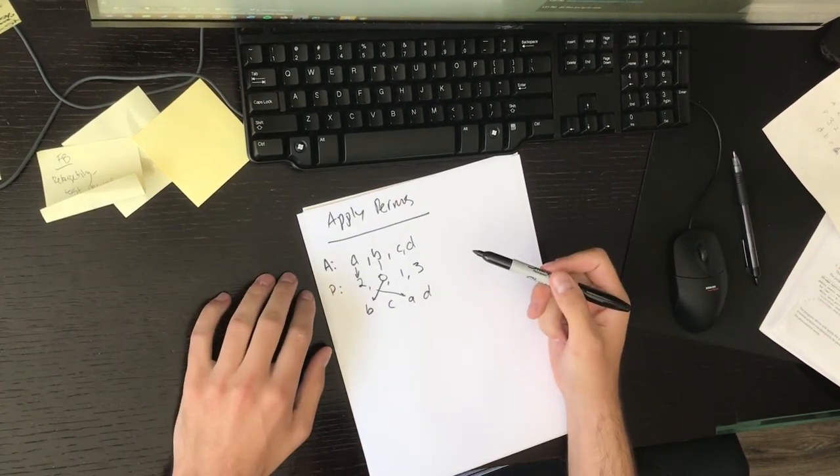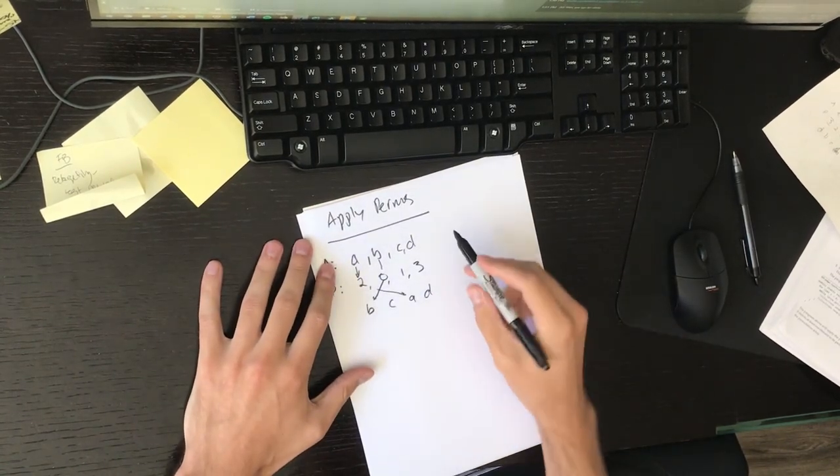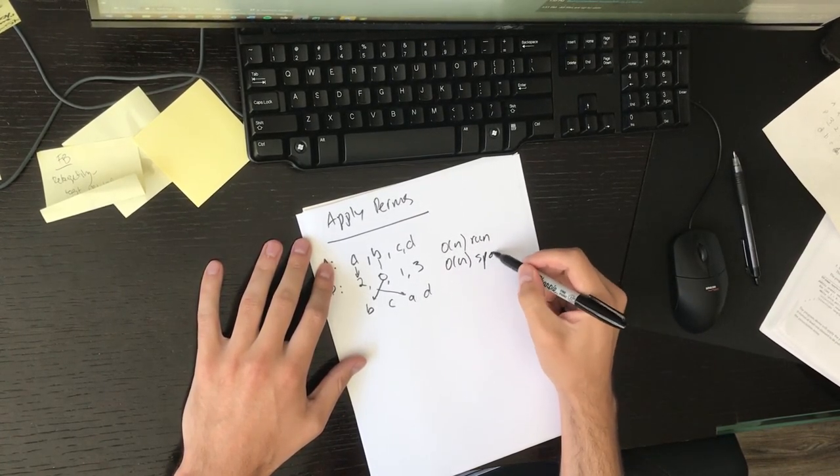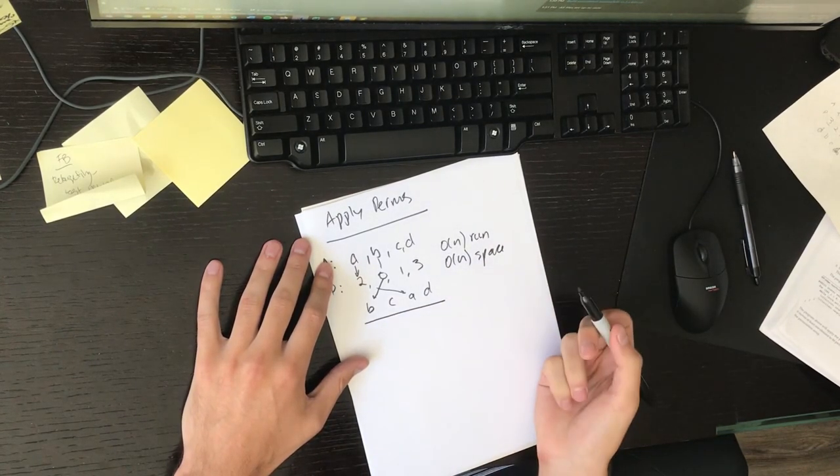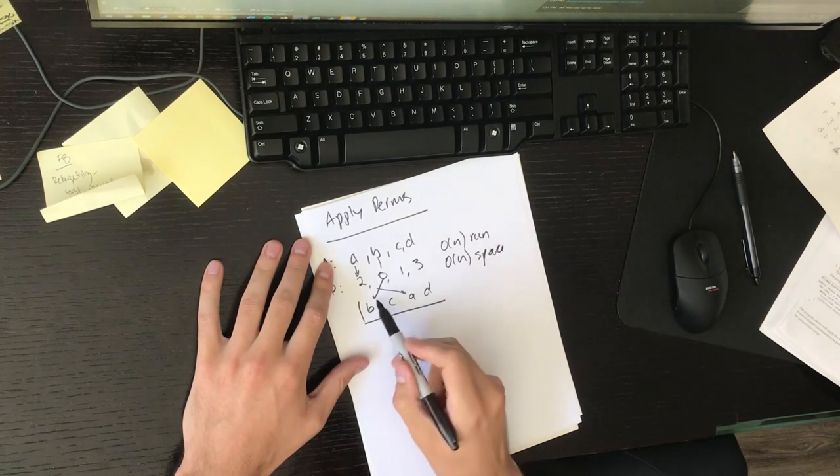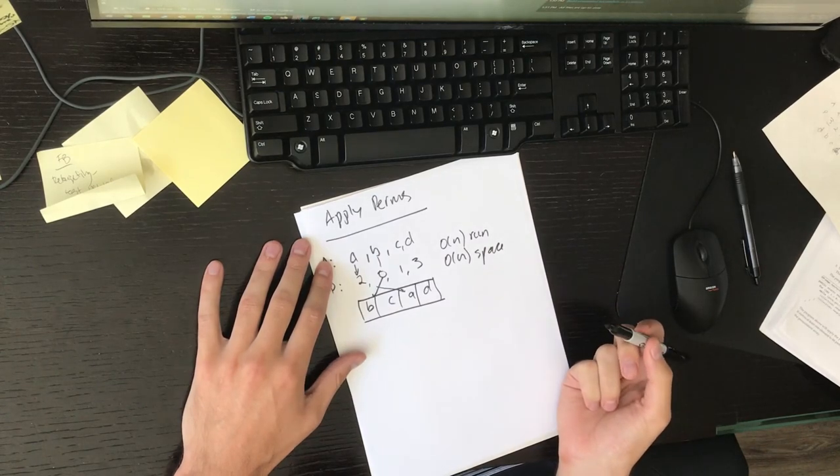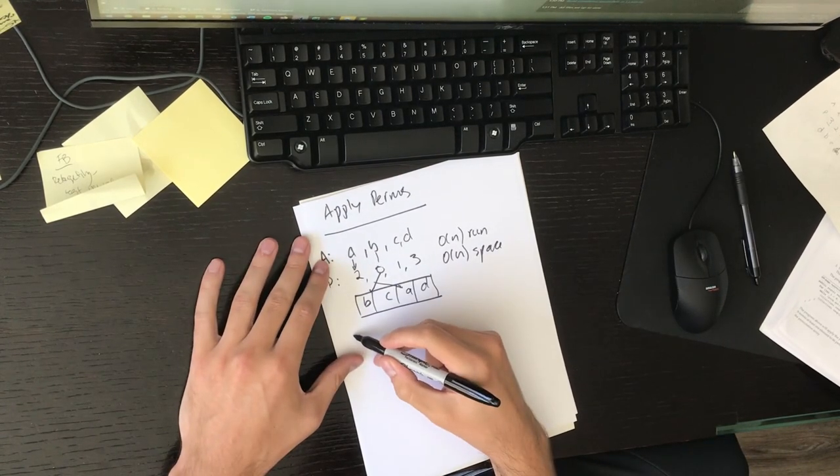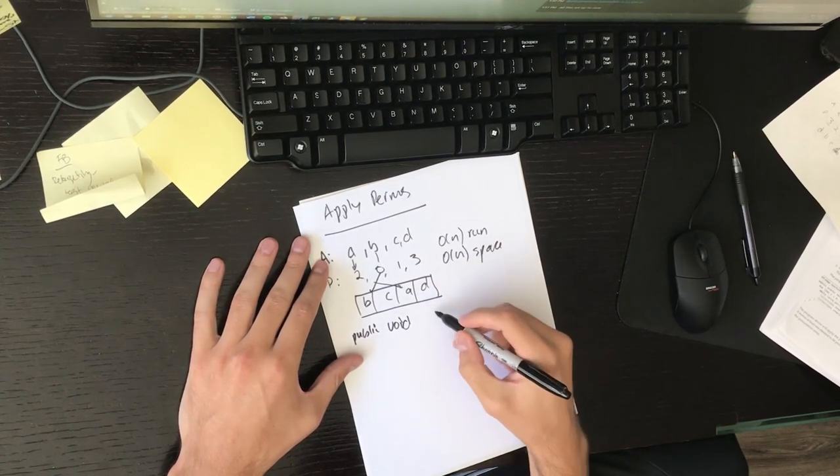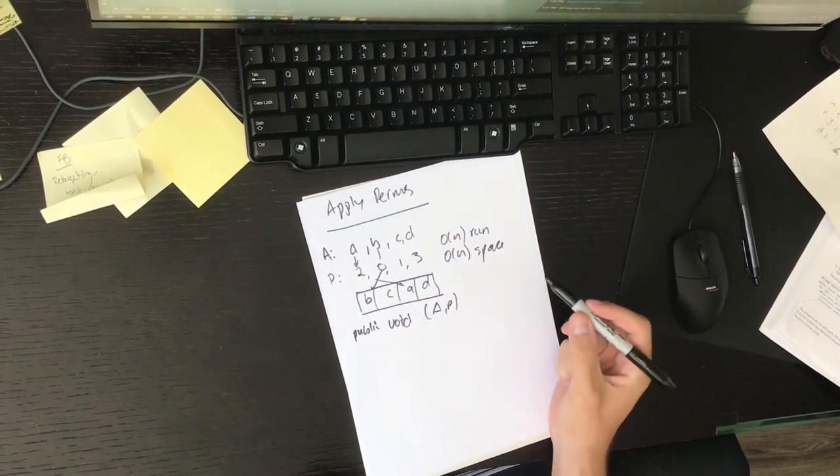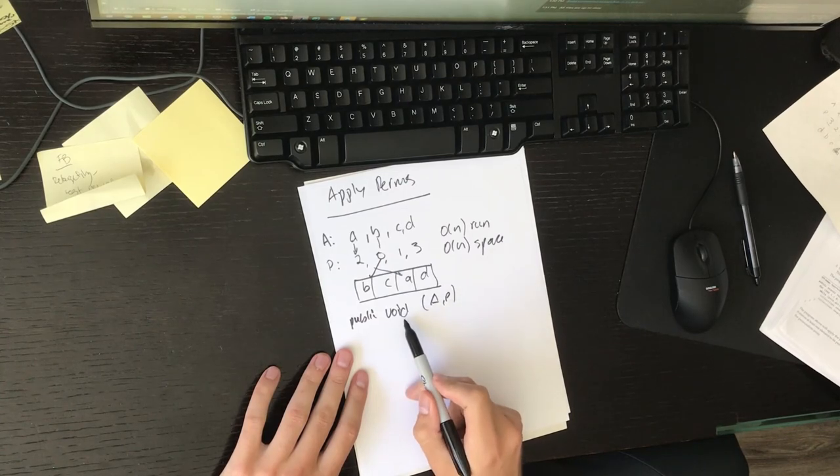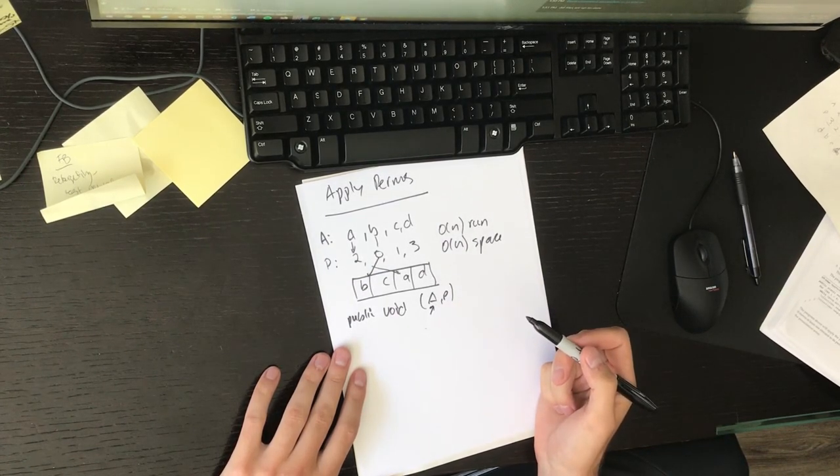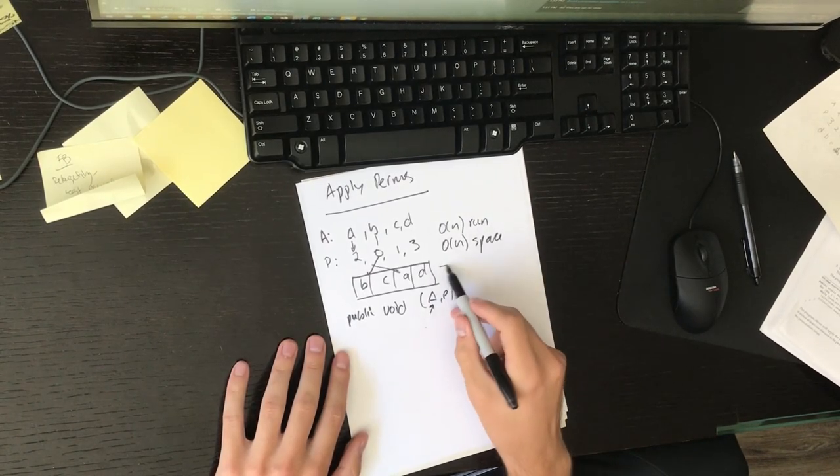So the intuitive or brute force way to do what I just did is just one pass, it's O of N runtime, but it also requires O of N extra space because this result array will be returned. This is defined as extra space because if they give you a function header, it's supposed to be something like public void with A and P in the function header, meaning you're not supposed to actually create a new array and return it. You're supposed to modify A and then return nothing.